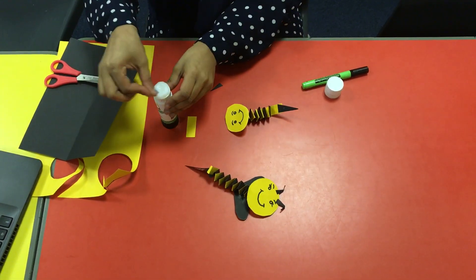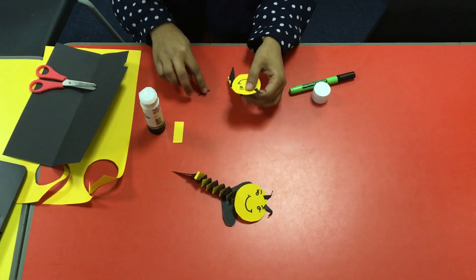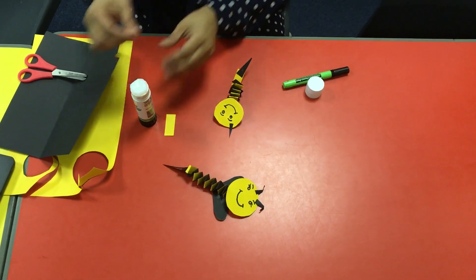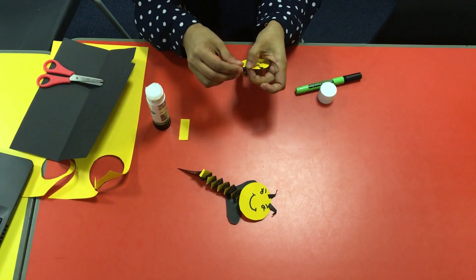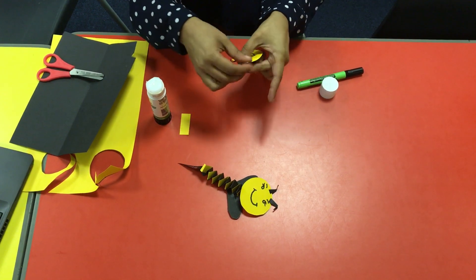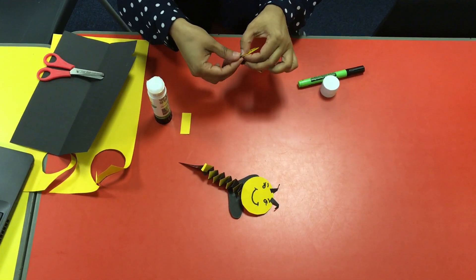Just glue the ends. What you want to do is fold inwards to give them that 3D effect.